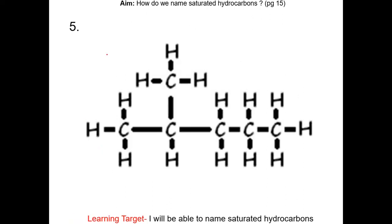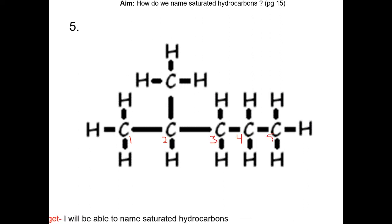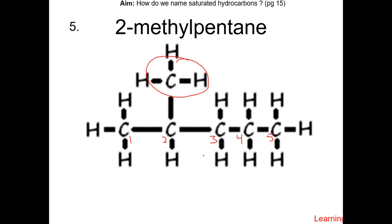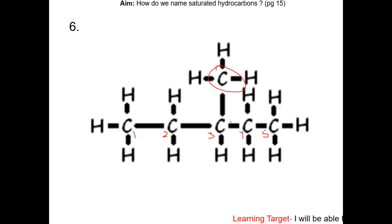For question 5 on page 17, the compound has a parent chain of 5 carbons. There is a methyl group at carbon 2. Therefore, the name of this compound is 2-methylpentane. For question 6, the carbon chain is also 5 carbons long. The methyl group is on carbon 3. Therefore, this is 3-methylpentane.